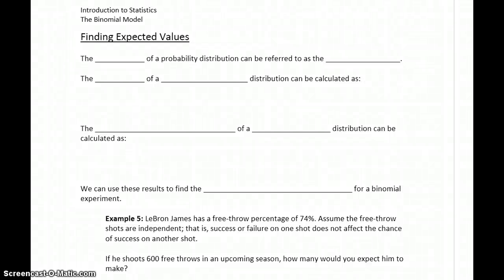When we work with the binomial distribution, we can also calculate expected values. That is, what would be the expected number of successes. If we conducted this experiment 100 times, 500 times, how many times would we expect to see the success that we're interested in?